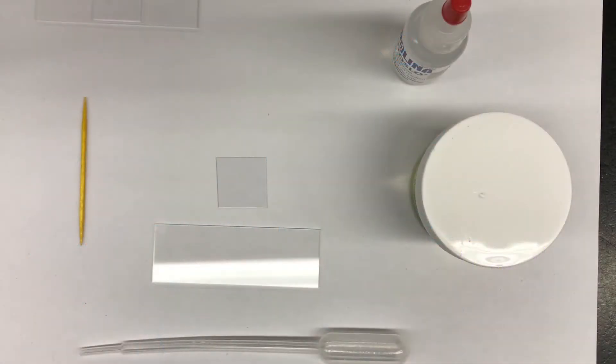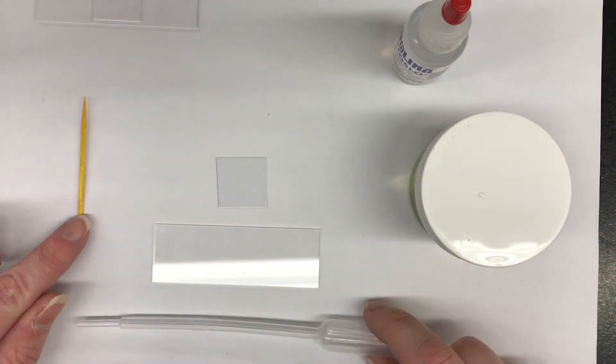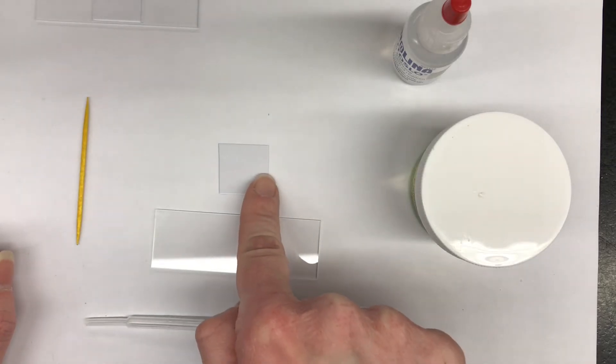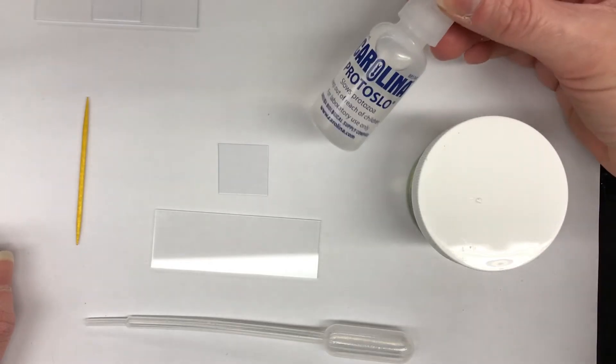Now we are going to make a wet mount slide for the euglena. We're going to start with our toothpick, our plastic pipette, our glass slide, cover slip, our specimen, and the protosloe.